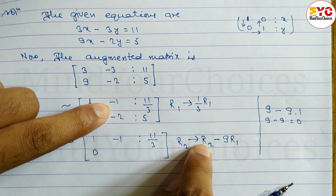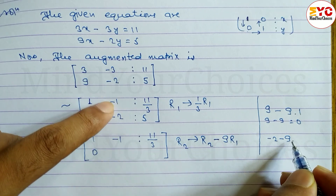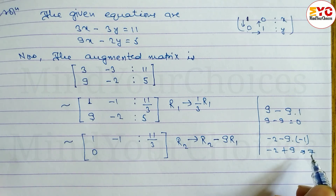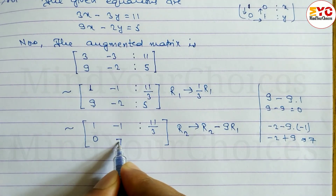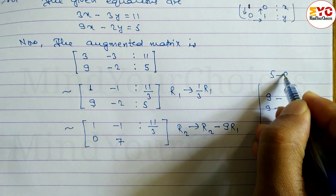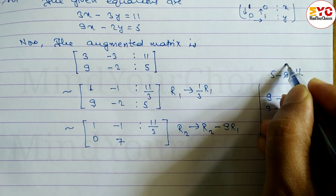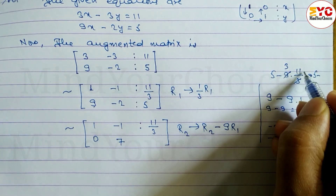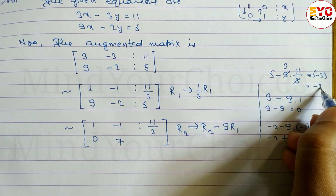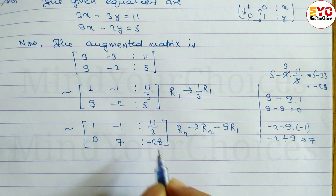For the second entry of R2: we have minus 2, so we write minus 2 minus 9 times R1's second entry, which is minus 1. So minus 2 minus (minus 9) equals minus 2 plus 9, which is 7. For the constant of R2: we have 5, so 5 minus 9 times 11 divided by 3. That is 5 minus 33 over 3, which gives minus 28. So R2 is now: 0, 7, minus 28.